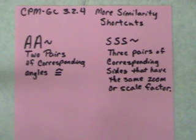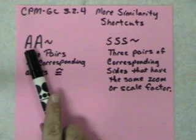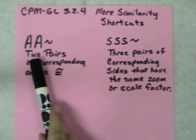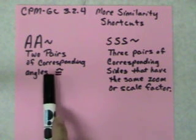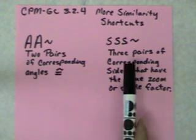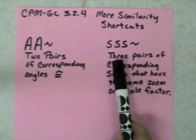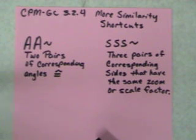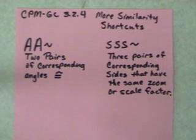In section 3.2.4, we continue to look for more shortcuts on triangle similarity. The two shortcuts we already have are angle-angle similarity, with two pairs of corresponding congruent angles, and side-side-side similarity, where we have three pairs of corresponding sides with the same scale factor. We used a technology model today to explore some options.